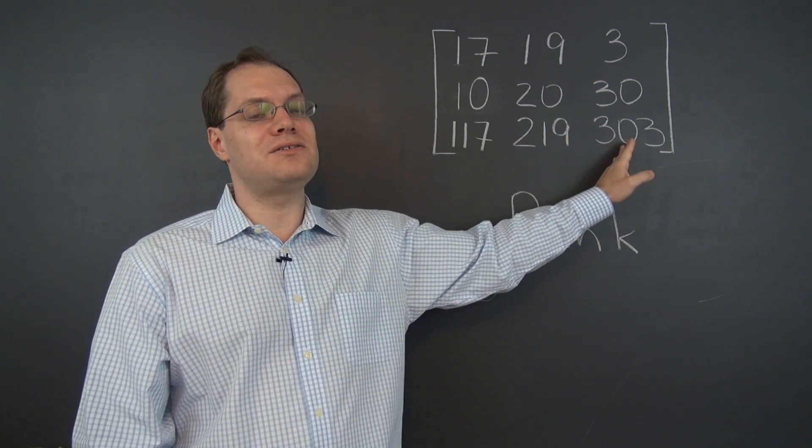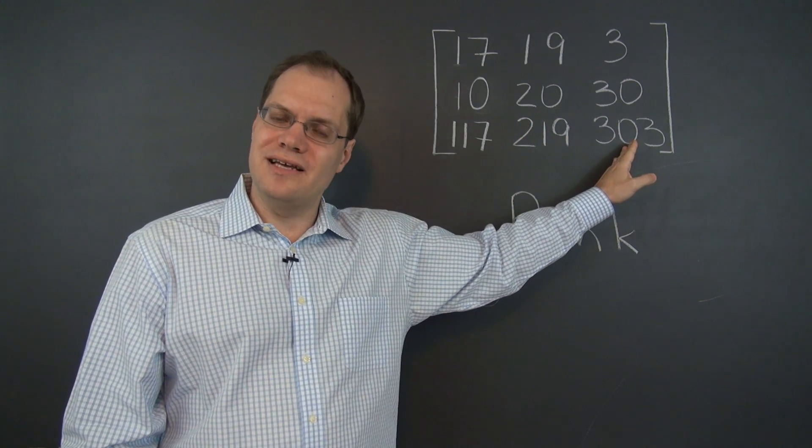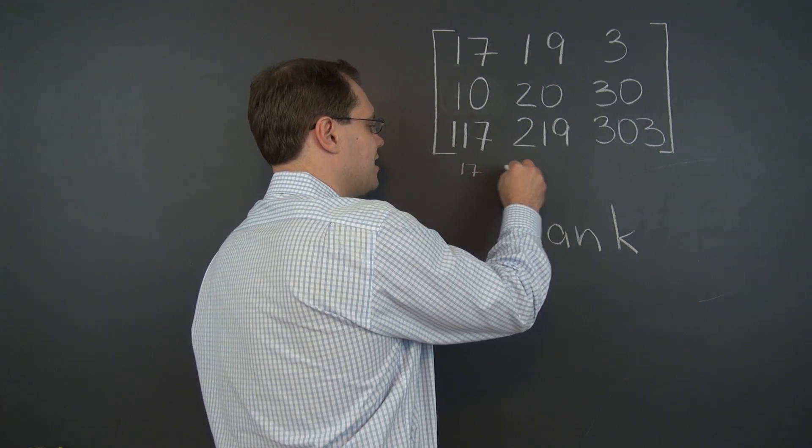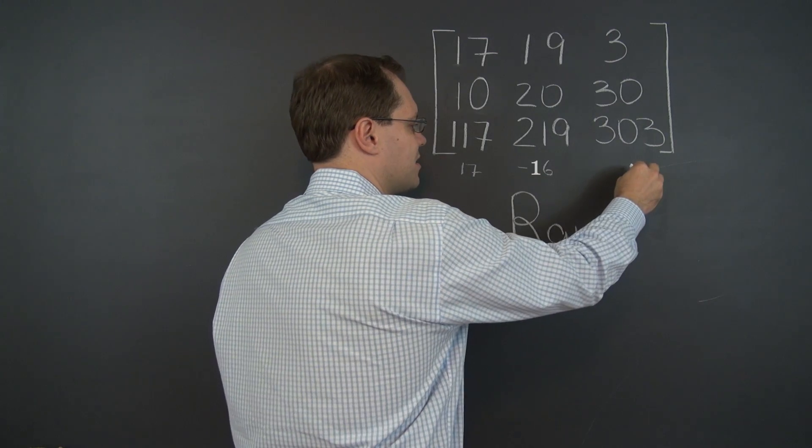It is not at all easy to see that there is a relationship among the columns. In fact, that relationship is 17 of this column, negative 16 of this column, and 5 of this column.